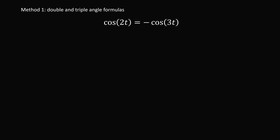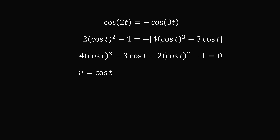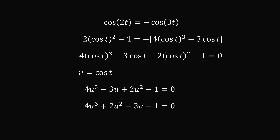Method 1 is to use the double and triple angle formulas. We'll use the formula for cosine of 2t and for cosine of 3t. This will reduce the equation to a variable that just depends on the cosine of t. So we have 2 times cosine squared of t minus 1 is equal to the opposite, which is negative of 4 times cosine cubed of t minus 3 cosine of t. Bringing everything to the left side gives us the cubic equation 4u cubed plus 2u squared minus 3u minus 1 equals 0, where u equals cosine of t.